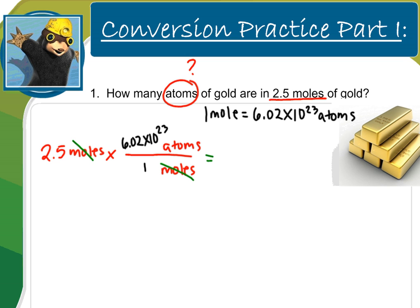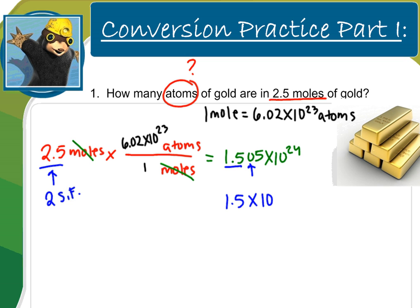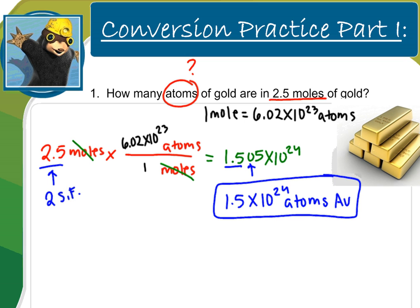Putting this into my calculator gives a large number: 1.505 times 10 to the 24th. I have to round to the correct number of sig figs — the given has two sig figs, so my answer also needs two sig figs: 1.5 times 10 to the 24th atoms of gold. A typical mistake is to forget the exponent. In your calculator it will appear as E24, which means times 10 to the 24th. Your teacher should have taught you this.